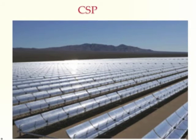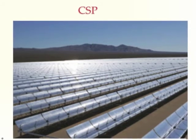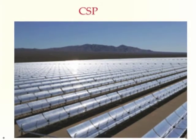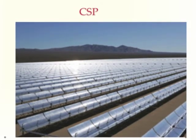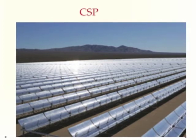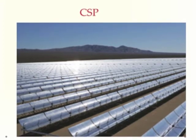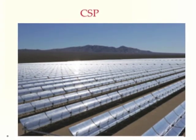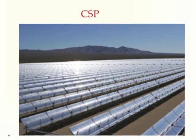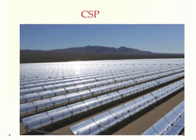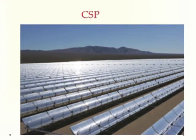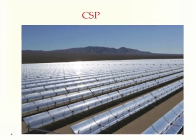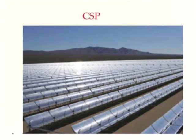All current and all planned future concentrating solar power CSP projects are designed for the desert southwest. There are two kinds of CSP: one uses parabolic trough collectors, and the other uses the power tower concept. We'll look at both of these briefly.